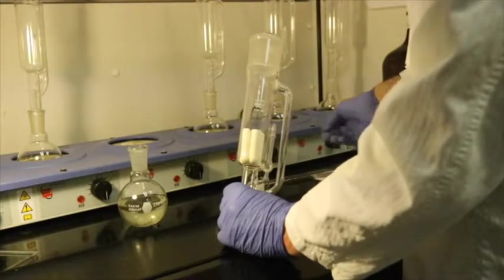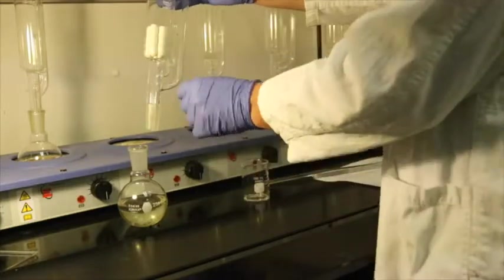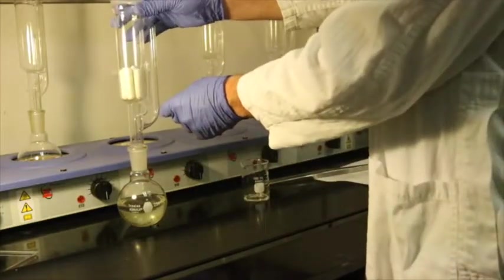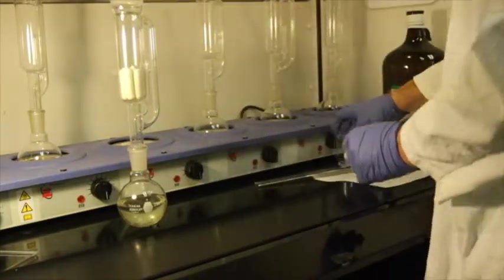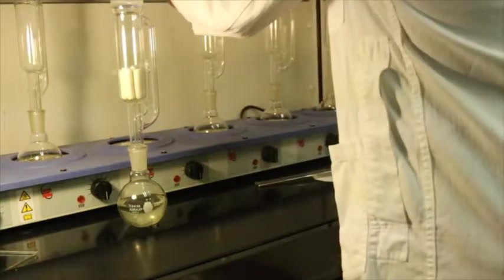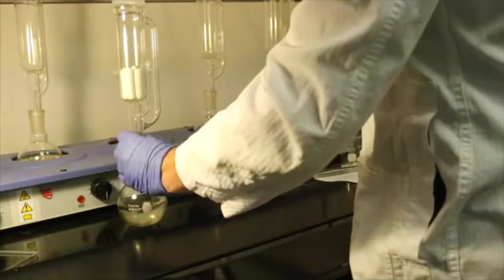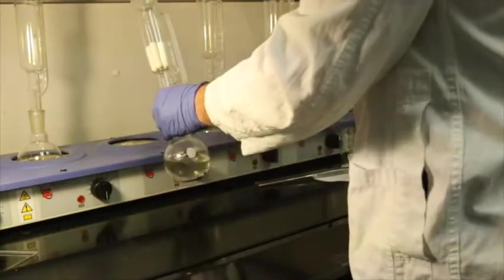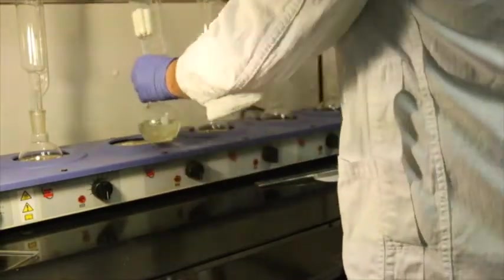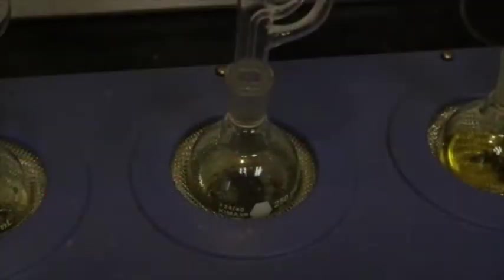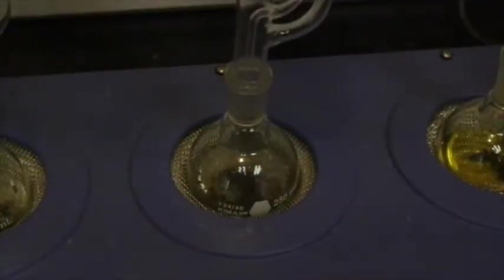The extractor is then reinserted into the solvent flask, and both are placed back into the Soxhlet. For demonstration purposes, we have taken this video with the fume hood sash up. In reality, all procedures with solvents or the Soxhlet should occur under an operating fume hood with the sash down. Once reinserted, the Soxhlet is turned on. Eventually, the Soxhlet will start boiling.